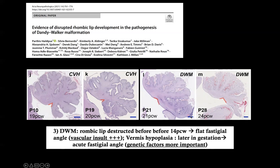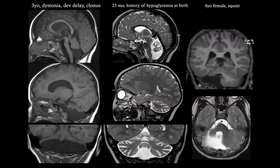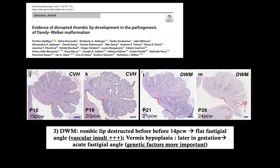This explains why in Dandy-Walker versus vermian hypoplasia, although the vermis is small in both, Dandy-Walker shows the tail sign and a flattened fastidium. In vermian hypoplasia, the fastidium remains acute. In Dandy-Walker, a vascular insult before the 14th week of gestation means the rhombic lip does not internalize, the posterior lobule does not develop, and the fastidium remains flat. So you distinguish these two by looking at the fastidium and tail sign.